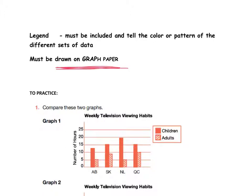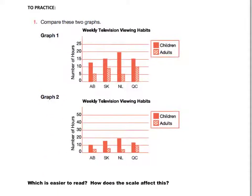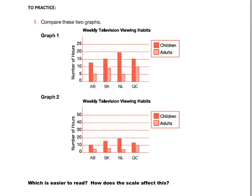All right. To practice. We're going to just compare two graphs to begin with and see what makes them easier to read. So we've got both of these graphs that are about the weekly television viewing habits of children and adults by the looks of things. We are missing a title down here, but this looks like it's Alberta, Saskatchewan, Newfoundland, Quebec. Same provinces here. Here we have the number of hours and the number of hours. Counting by 10s here, counting by 5s here.